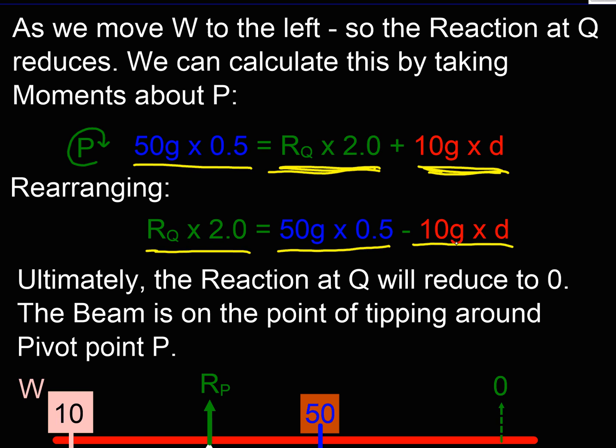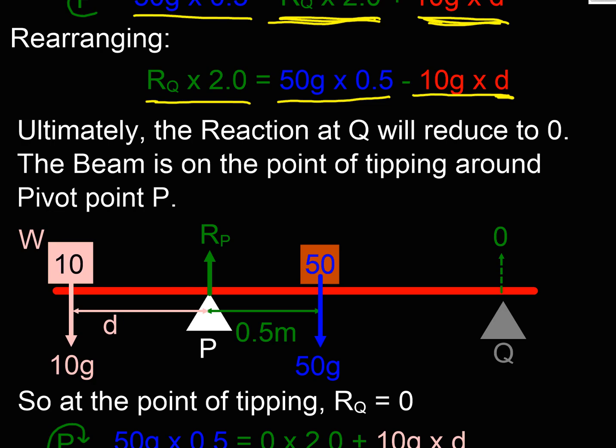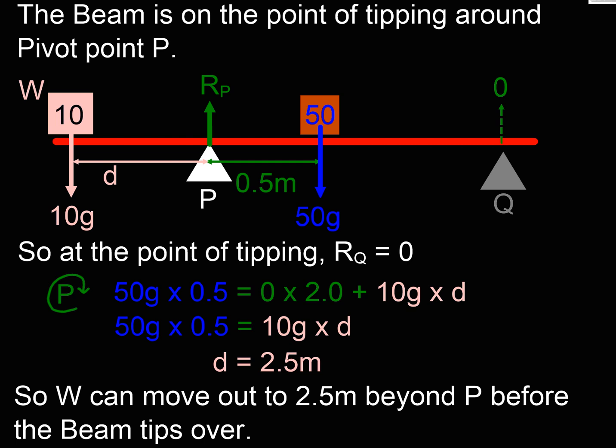So actually, the reaction force is reducing. That makes sense. We put more weight on the left-hand end, we don't need to support so much on the right-hand end. And ultimately, if we increase this distance more and more, the reaction force is going to go to zero. So what happens at that point? Let's just have a look in our diagram.